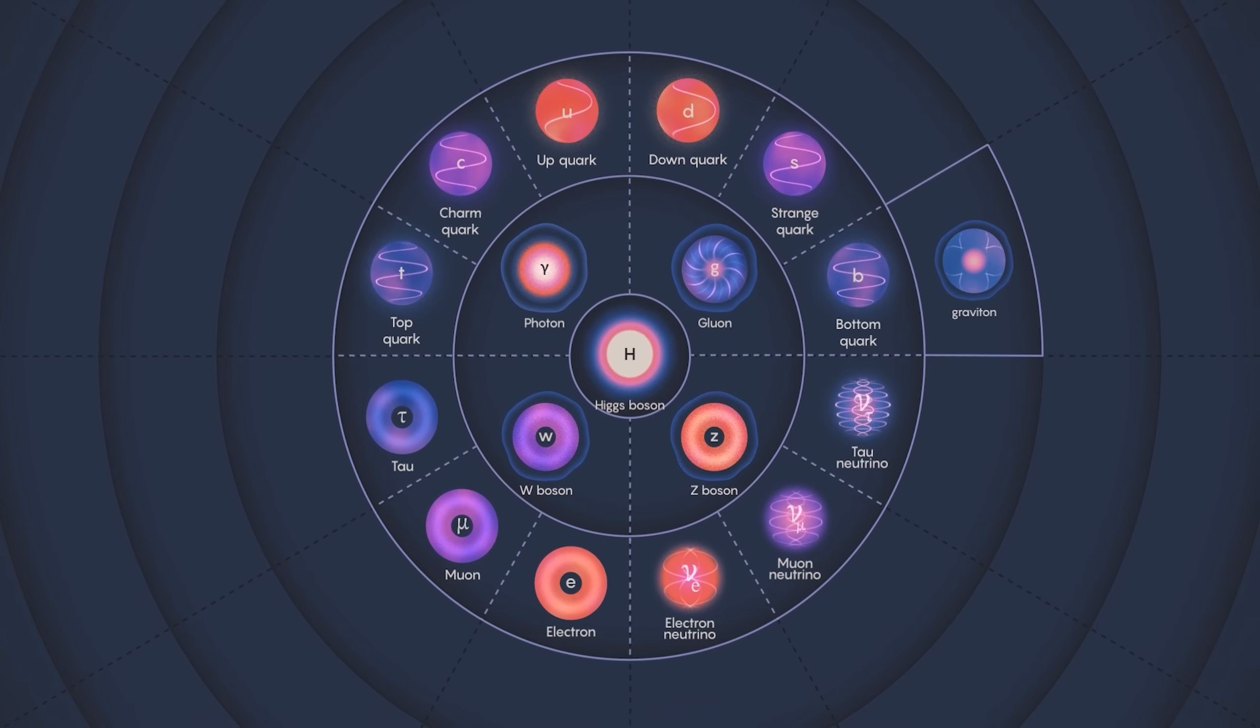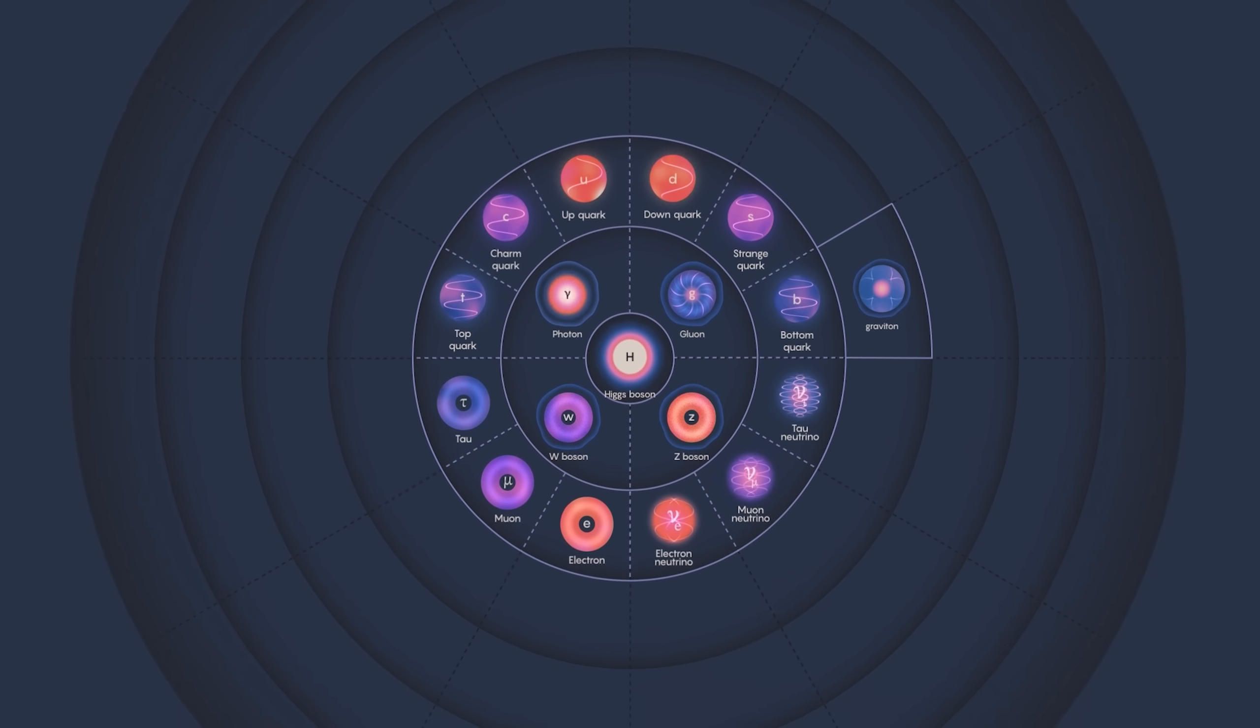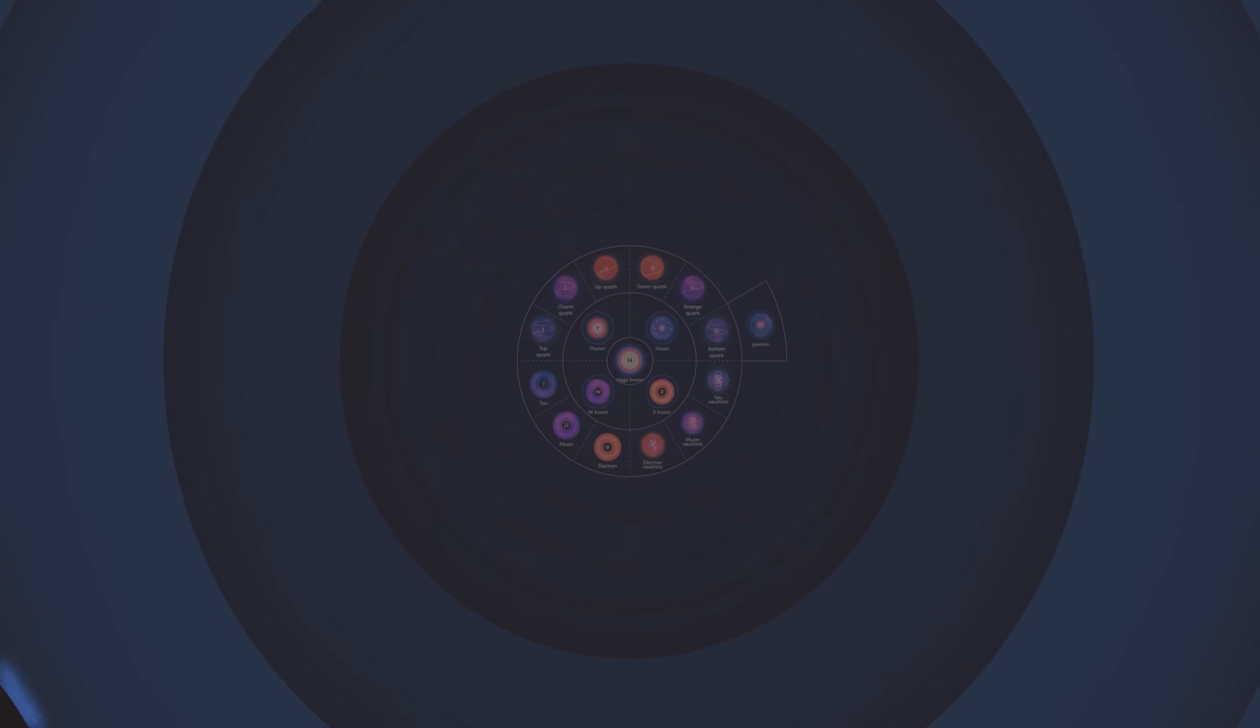There are other things missing too. The standard model doesn't include the invisible realm of dark matter and dark energy, which means that we're missing an explanation for a whopping 95% of the energy in the universe. Dark matter is almost certainly made up of additional particles that don't interact with electromagnetism. Perhaps these particles have their own forces and their own messenger bosons.